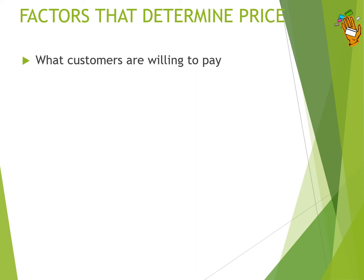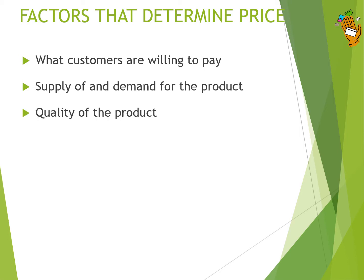So what factors determine price? First, what customers are willing to pay — what is the customer prepared to pay for a product, what do they think it's worth? Another factor is the supply of and demand for the product. If products are in short supply, for example during a bad harvest where there aren't enough potatoes, the price of potatoes will go up. The same applies to concert tickets — a limited supply and huge demand means companies can put the price up.